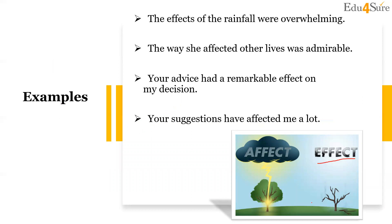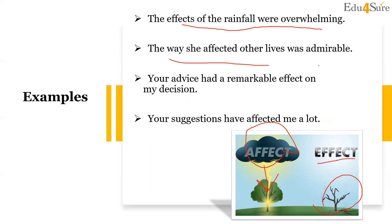Due to heat, the plant dried up — heat had an effect on the plant. For example: 'The effects of the rainfall were overwhelming.' 'The way she affected other lives was admirable.' 'Your advice had a remarkable effect on my decision' — effect here is the outcome. 'Your suggestions have affected me a lot' — affected my decisions greatly.